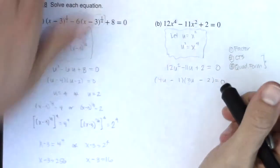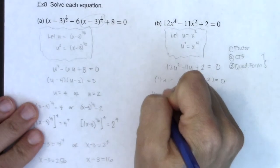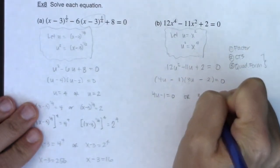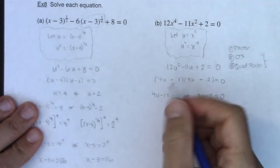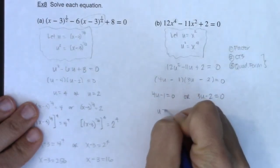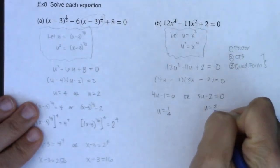Okay, so from here I can use the zero product property. So either 4u minus 1 equals 0 or 3u minus 2 is equal to 0. If I solve for u, I'm going to add 1 to both sides and then divide by 4, so I will get u is equal to 1 fourth or u is equal to 2 thirds.